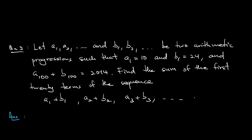Since a and b are both arithmetic progressions, aₙ = a₁ + (n−1)c, where c is the common difference of the first sequence. Similarly, bₙ = b₁ + (n−1)d, where d is the common difference of the second sequence.